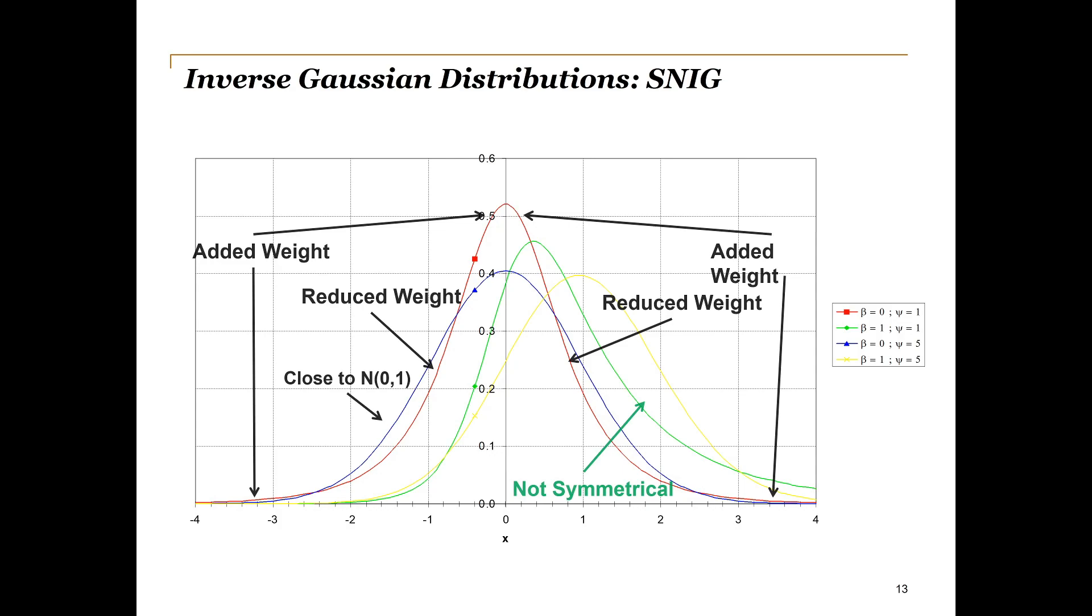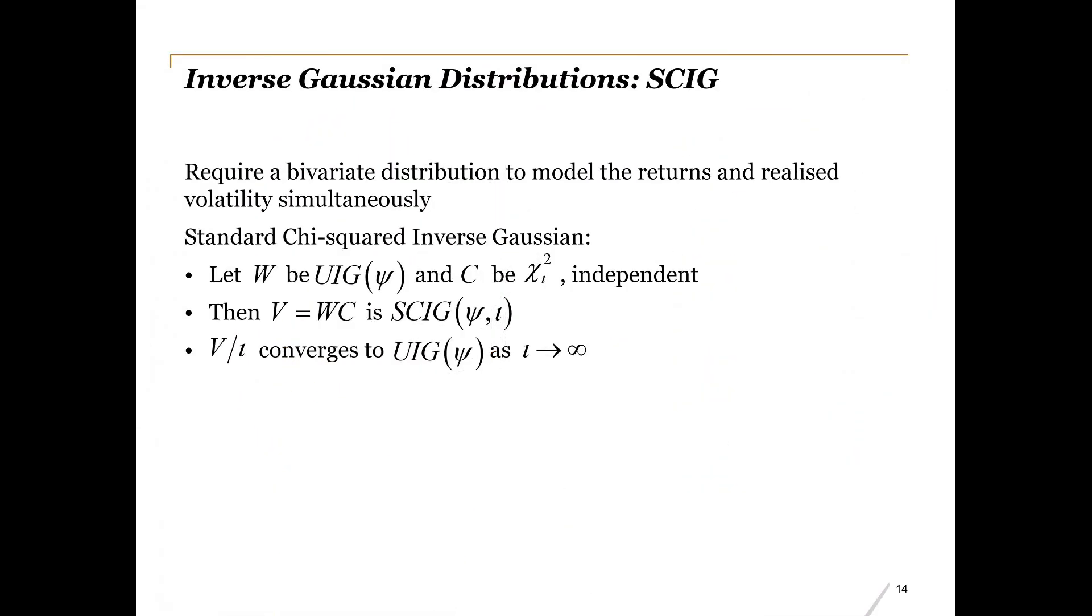However, we have not yet added much to improve our modeling of the volatility. We still have only the volatility component of the classic GARCH model, which we will shortly show to be only a smoothed version of the actual or realized volatility experienced. In order to model the returns and realized volatility simultaneously, we need a bivariate distribution, which we will now introduce.